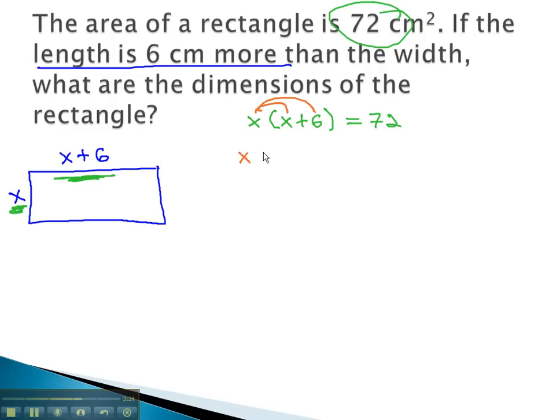Again, we'll distribute the x, giving us x squared plus 6x is equal to 72. Again, from this point, you can either make it equal to 0 and solve by either factoring or using the quadratic formula. However, you also might notice that because the variables and numbers are separated, we're ready to complete the square by finding c, which is half of b, or 6, squared. Half of 6 is 3, squared is 9. We simply need to add 9 to both sides to get the equation.